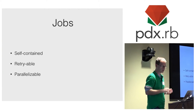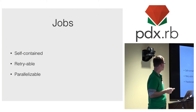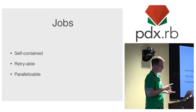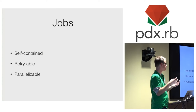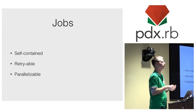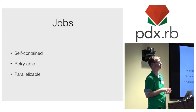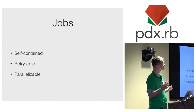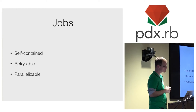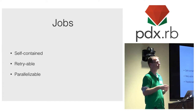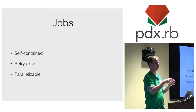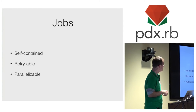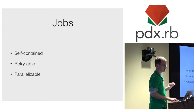Background jobs have three traits to consider. First, a job needs to be self-contained — you need to give the information. A background job is just a set of arguments, and those arguments need to describe perfectly what that background job needs to do. Second, a job needs to be retriable — jobs are going to fail and throw errors occasionally, so you have to consider what happens if this job is retried. Third, jobs need to be parallelizable — if you have hundreds of jobs executing at once, you need to think about all those other jobs running in parallel.